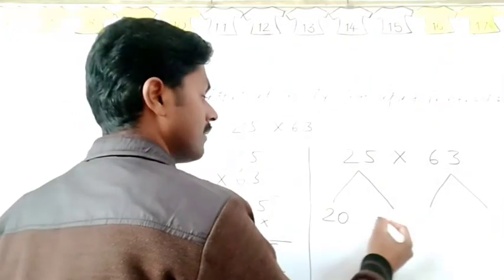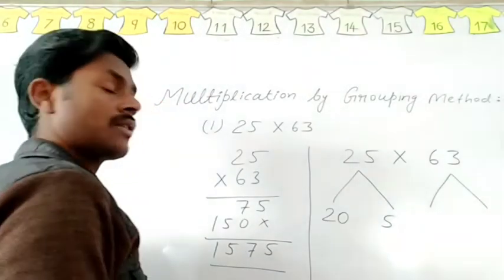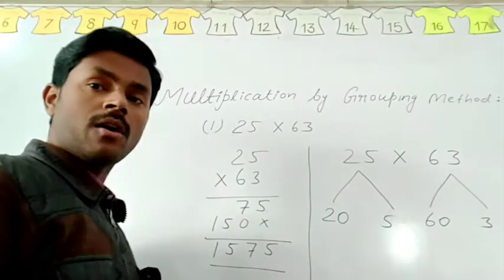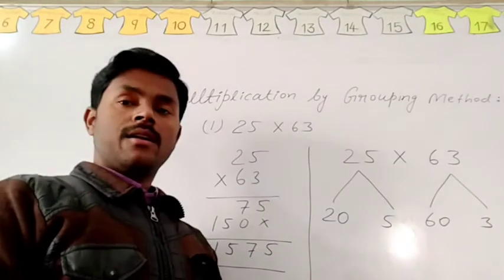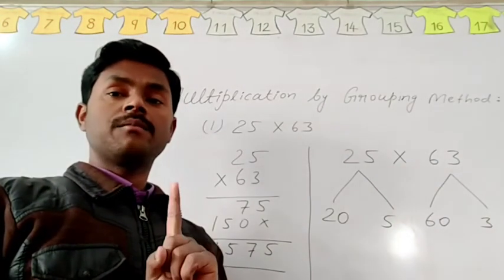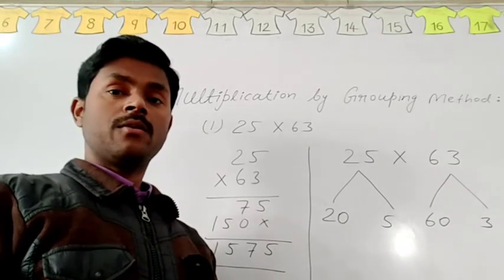20 and 5 will be two groups of 25 and 60 and 3 will be two groups of 63. At the time of grouping, always remember one number must be with 0.